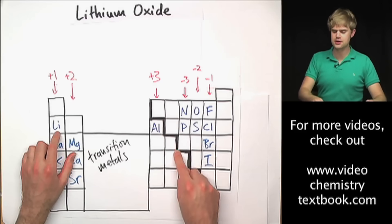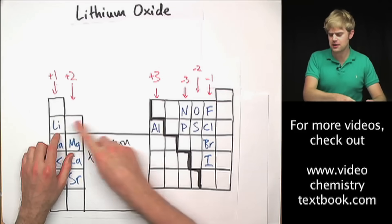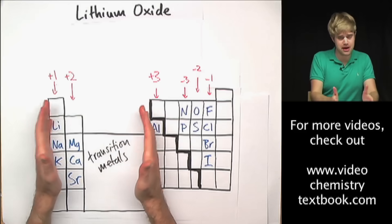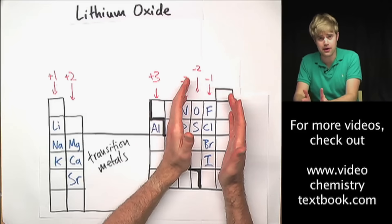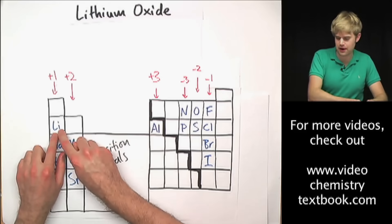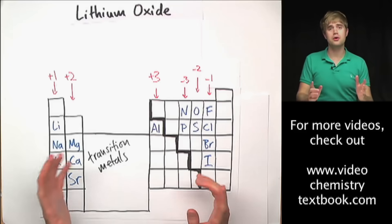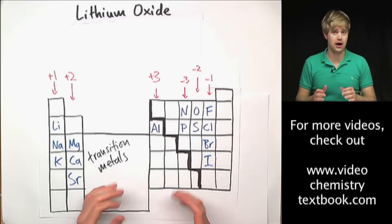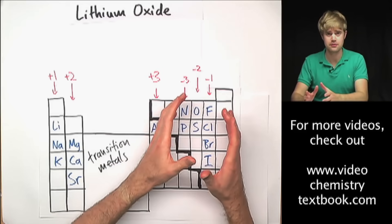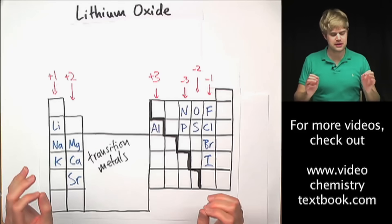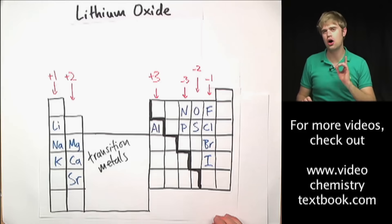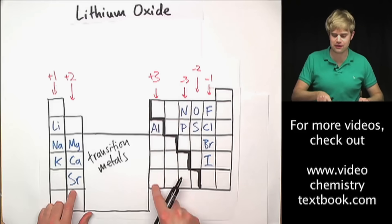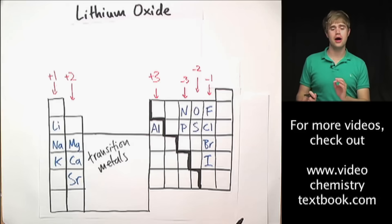There's a big thick staircase that separates lithium from oxygen. The staircase separates the metals on this side of the periodic table from the non-metals on the other side. So lithium is a metal and oxygen is a non-metal. This is important because a metal and a non-metal connected together means we're dealing with an ionic compound. Ionic compounds are always metals and non-metals, and that means the atoms in that compound have a charge. We want to find out what those charges are by looking at what column they live in on the periodic table.